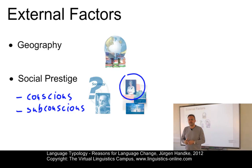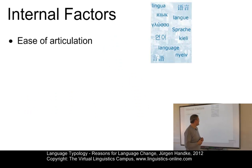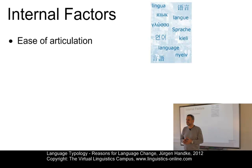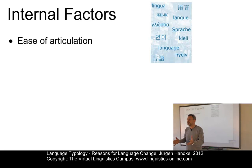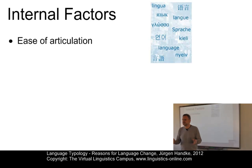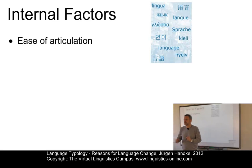Let's move on with the main internal factors. One of these factors is referred to as ease of articulation. In the 19th century, it was widely believed that sounds change because speakers want to minimize their articulatory effort. On this basis, sounds and sound systems would become simpler over long periods of time. In fact, there is evidence in various types of sound changes that this is the case.